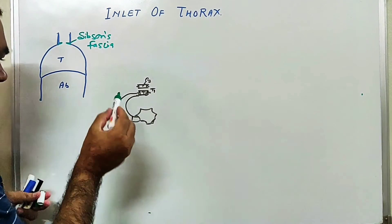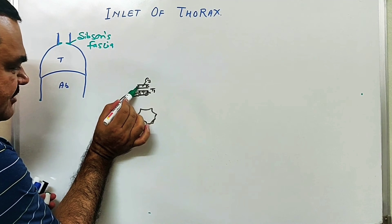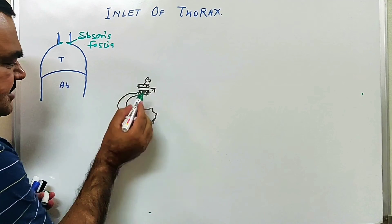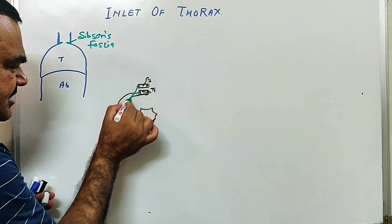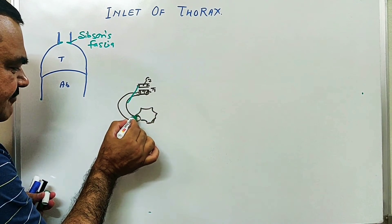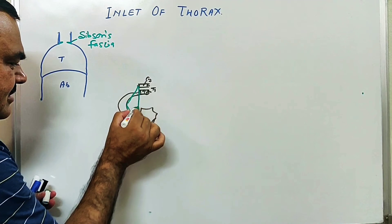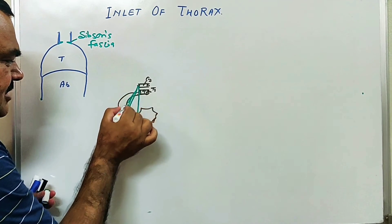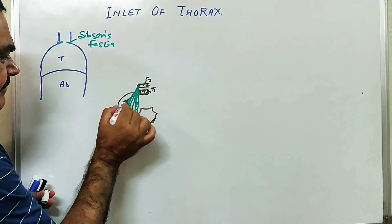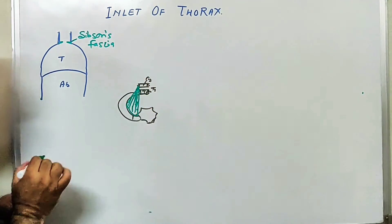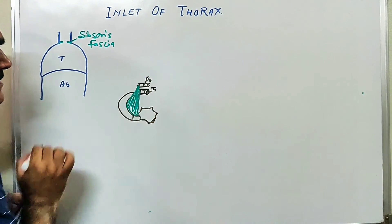This is a triangular fascia. Here is the transverse process of C7 — it attaches to the transverse process of C7 and the margin of the first rib and costal cartilage. This fascia is Sibson's fascia, or supraplural membrane.